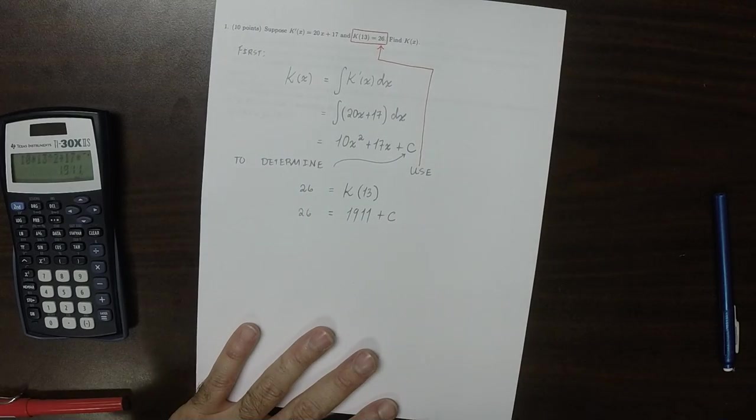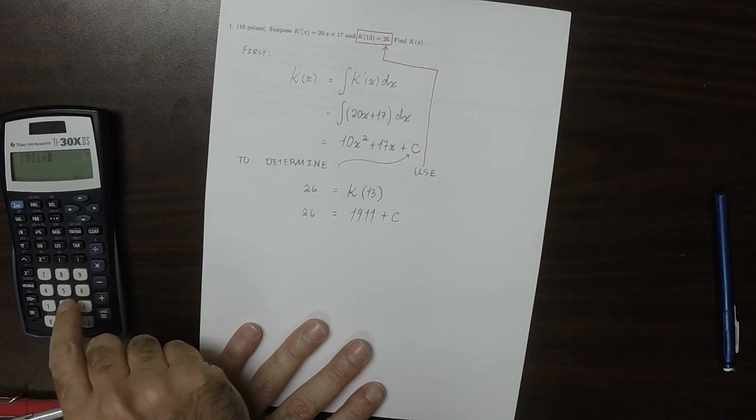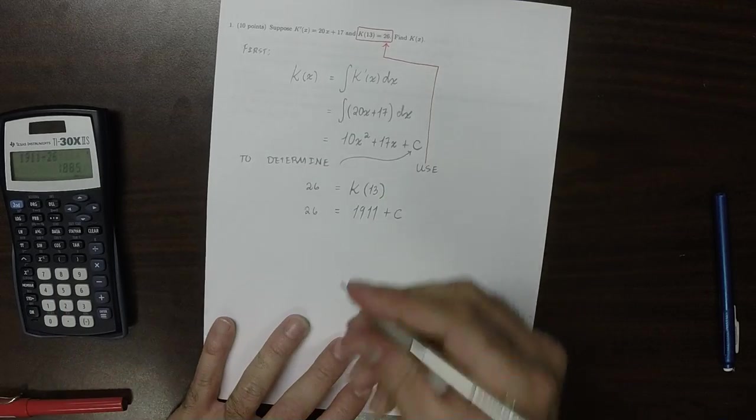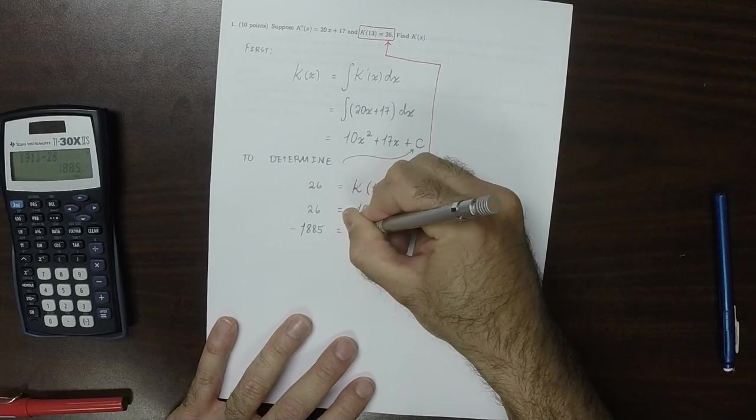And then move the 1911 to the other side. You get negative 1885 is c.